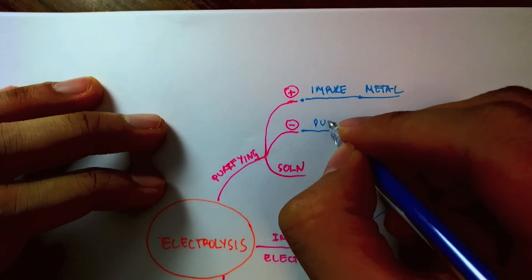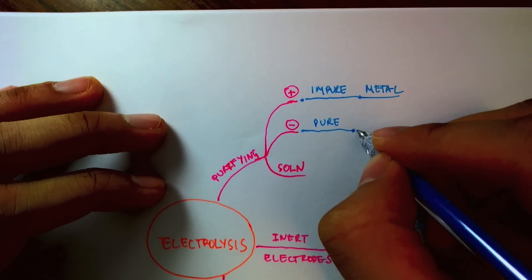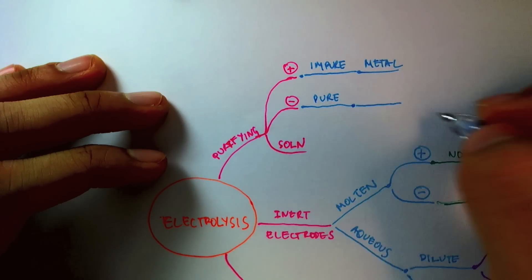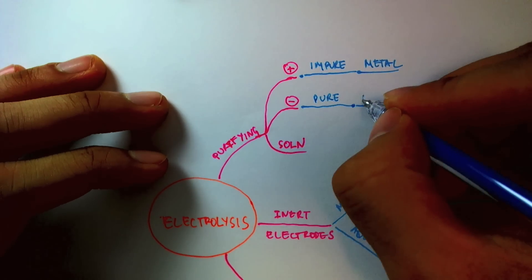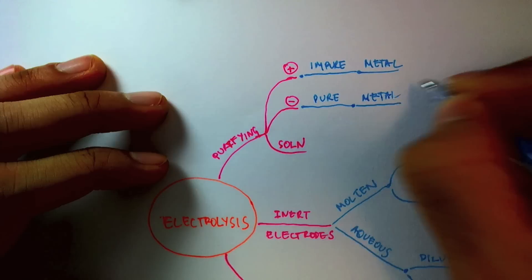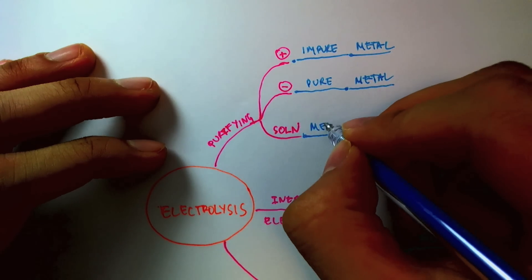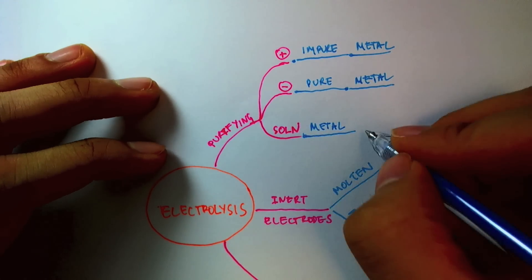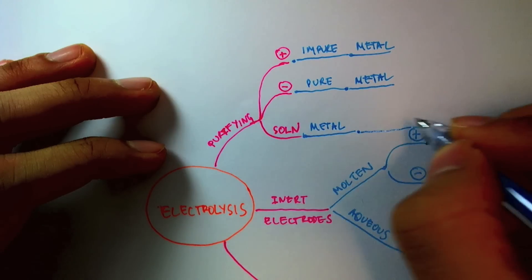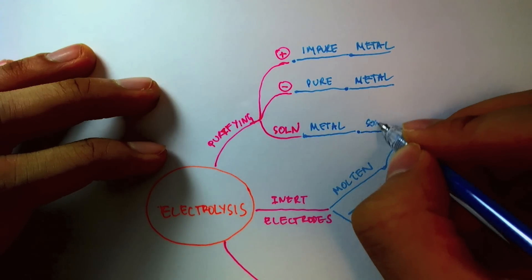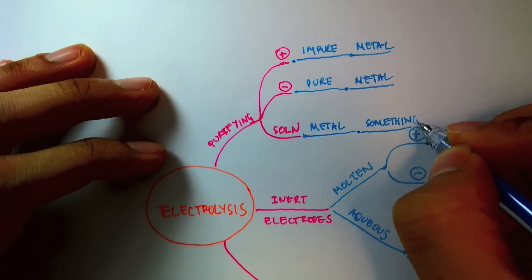That's the way we set it up. And at the cathode, we put the pure metal, because it will then attract the metal ions, which are positive. And the solution had to be a solution of the metal we are trying to purify. And it could be metal something, metal nitrate, metal sulfate. So I just write metal something.